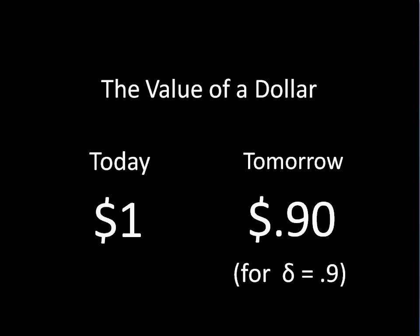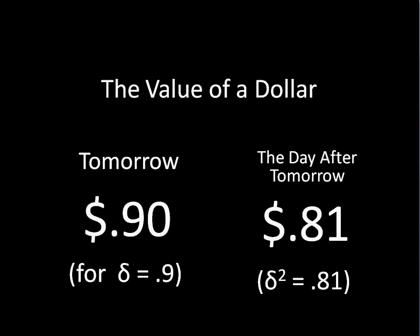For example, when discount equals .9, a dollar tomorrow is worth only 90 cents. And we can keep repeating this process. So two days from now, a dollar then will only be equivalent to having 81 cents today.